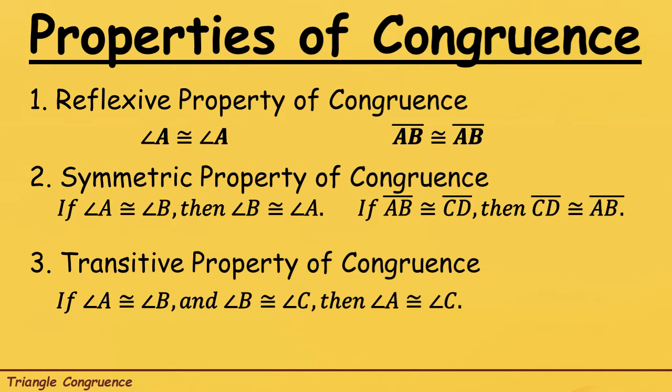And the last property of congruence is the transitive property of congruence. Let's have this one: if angle A is congruent to angle B, and angle B is congruent to angle C, then angle A is congruent to angle C. So dito sa transitive property of congruence, we are now dealing with 3. It can be 3 angles or 3 sides. Kasi dun sa symmetric, we are talking about 2 angles and 2 sides. But when it comes to transitive, 3 angles and 3 sides are involved.